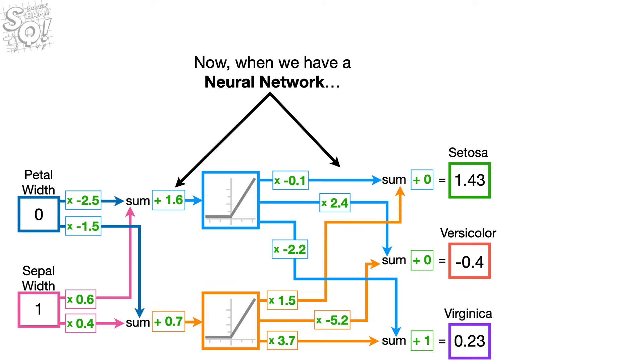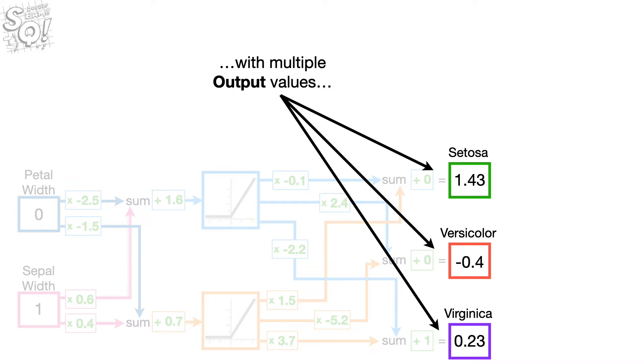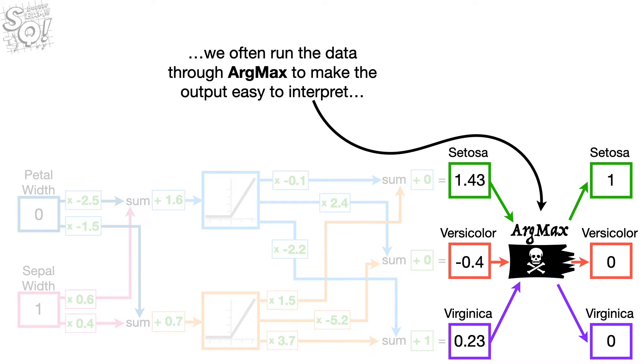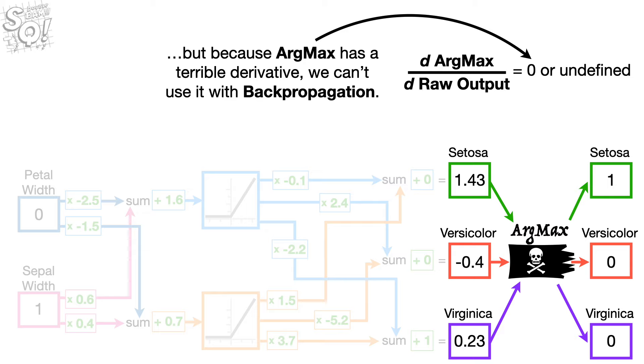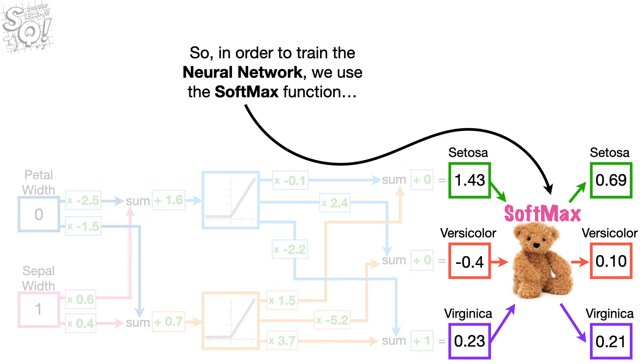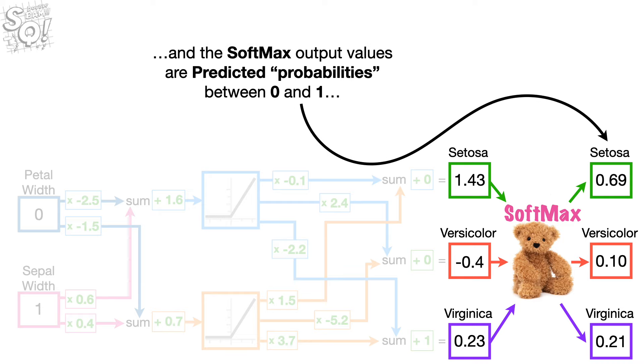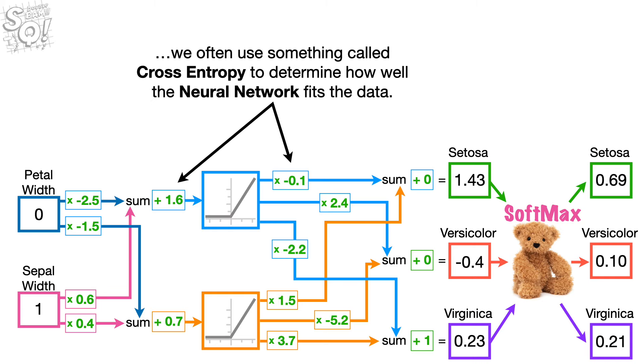Now, when we have a neural network with multiple output values, we often run the data through ArgMax to make the output easy to interpret. But because ArgMax has a terrible derivative, we can't use it for backpropagation. So, in order to train the neural network, we use the SoftMax function. And the SoftMax output values are predicted probabilities between 0 and 1. And when the output is restricted to values between 0 and 1, we often use something called Cross Entropy to determine how well the neural network fits the data.